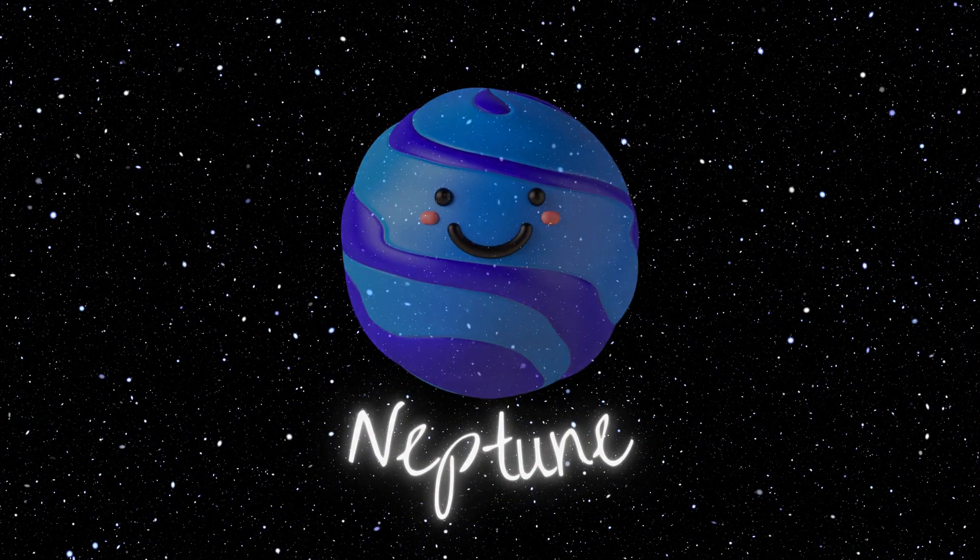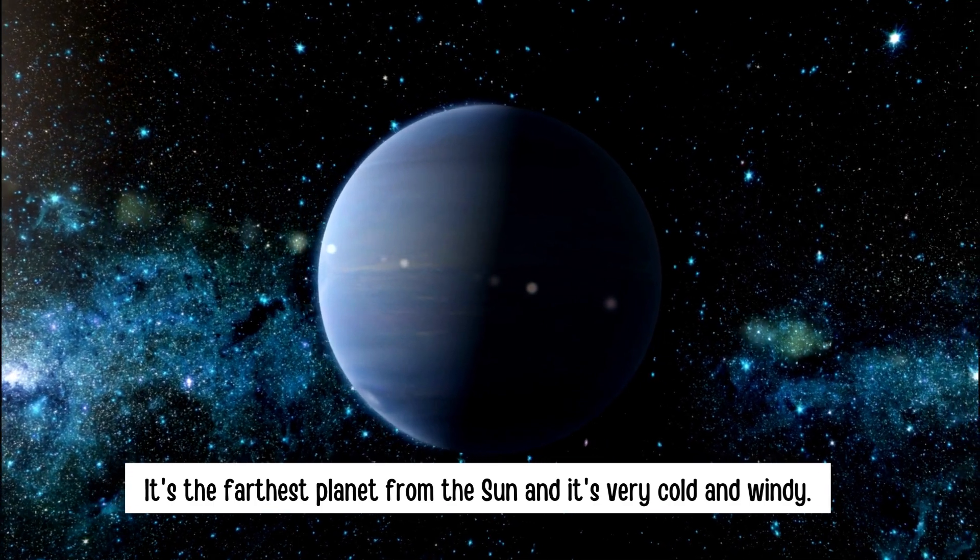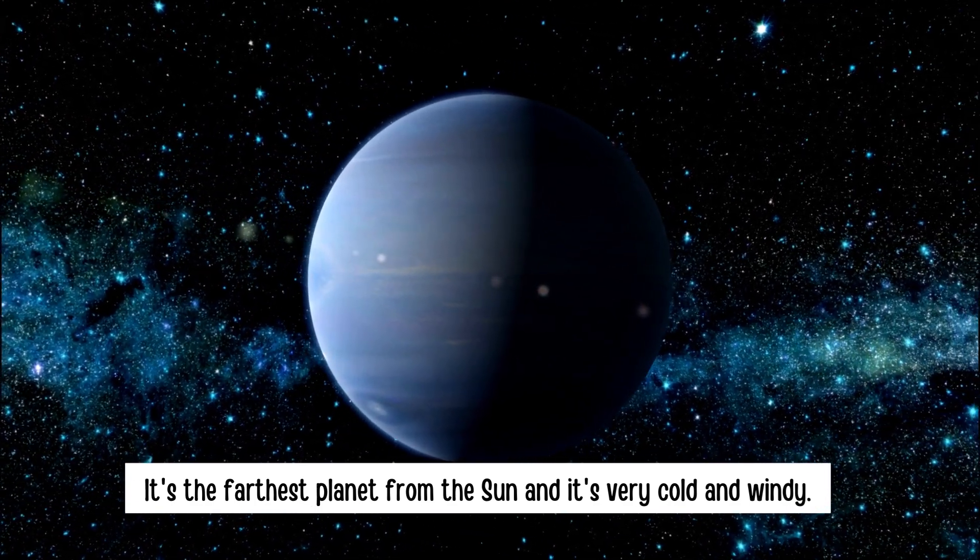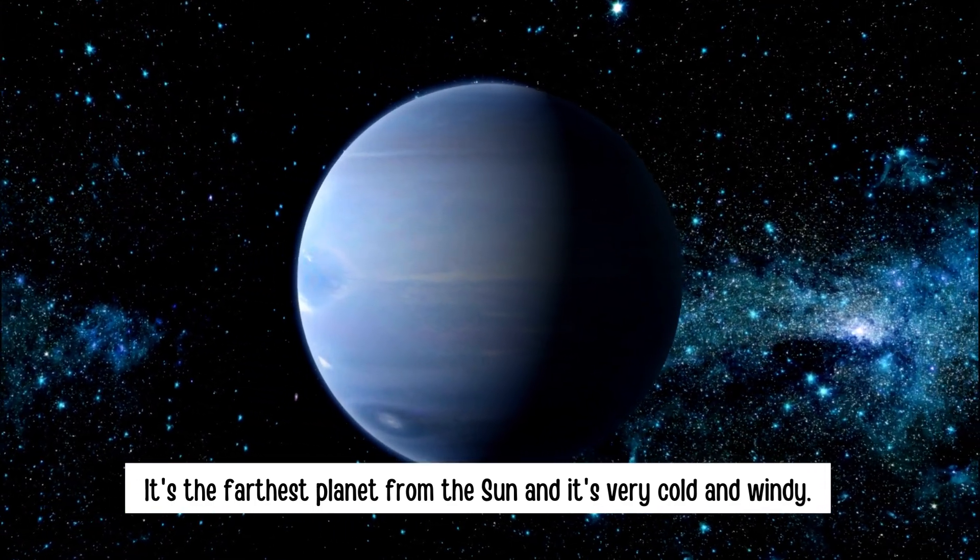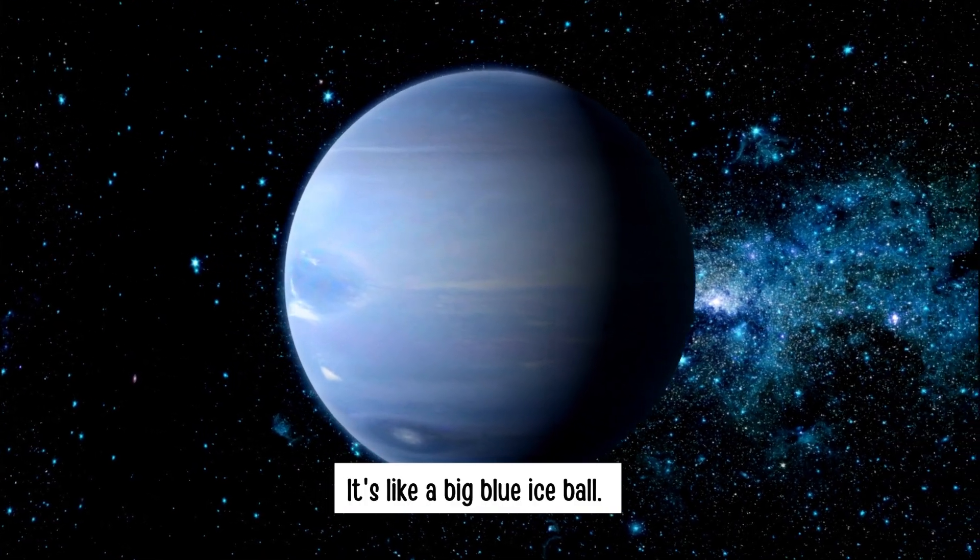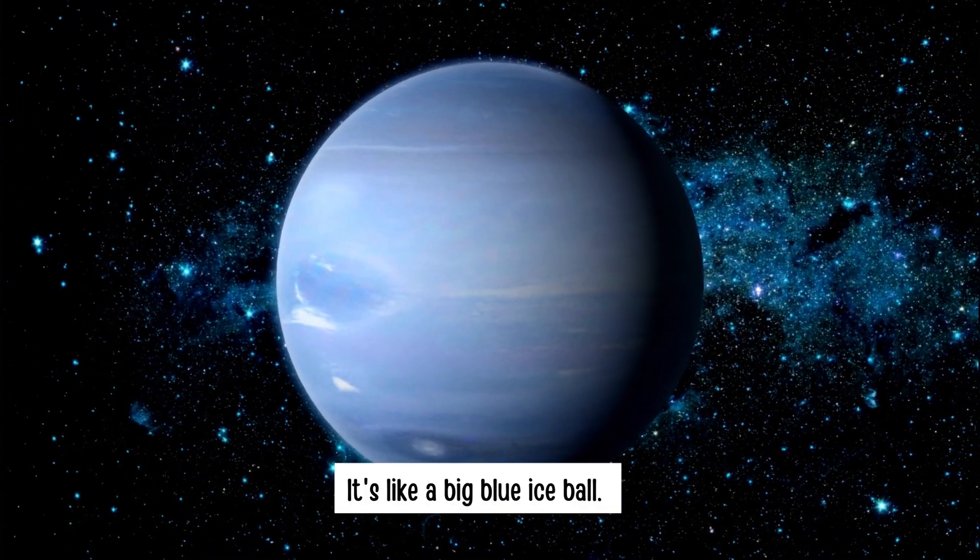Neptune. It's the farthest planet from the sun and it's very cold and windy. It's like a big blue ice ball.